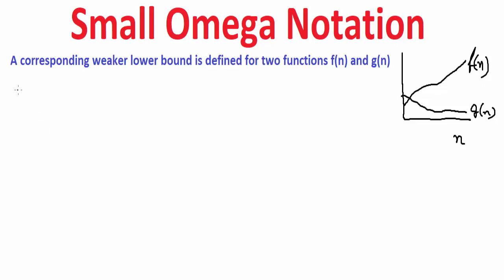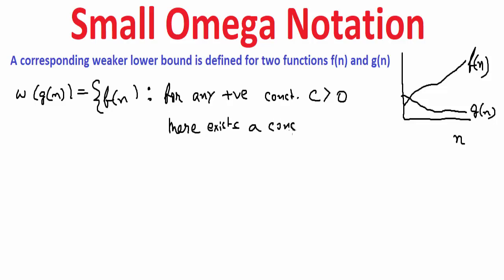We have the definition small omega g of n. A function f of n, for any positive constant c that must be greater than or equal to zero, there exists a constant n₀ that must also be greater than or equal to zero